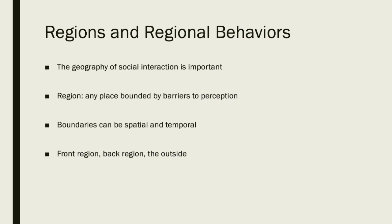This chapter is all about perceptual boundaries. There is a clear division between what we can perceive, where we can perceive it, and when we can perceive it versus everything else that we cannot perceive. Goffman defines a region as any place bounded by barriers to perception. He divides the world up into three regions: the front region, the back region, and what he calls simply the outside.